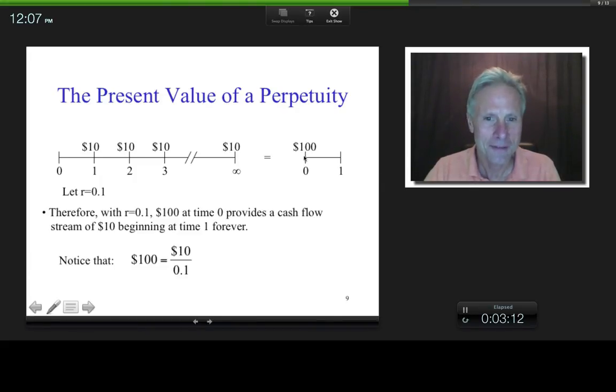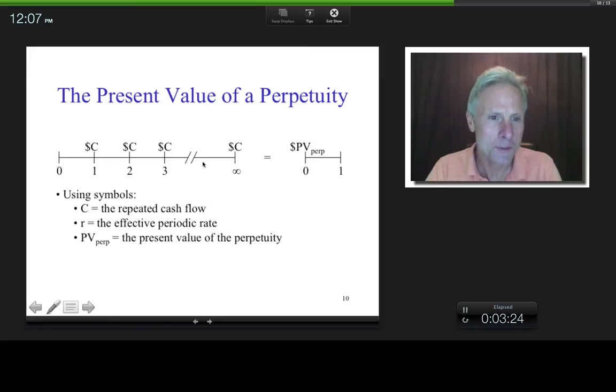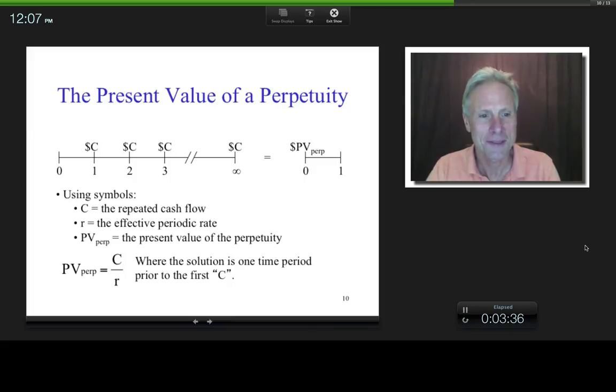Now, notice that this $100 is also 10 divided by the 0.1. So what we've done is we've just figured out the present value of a perpetuity. So if I use symbols, if I call C the repeated cash flow, if I call R the effective periodic rate, and this PV of perpetuity, present value of perpetuity, then the formula is basically C over R.